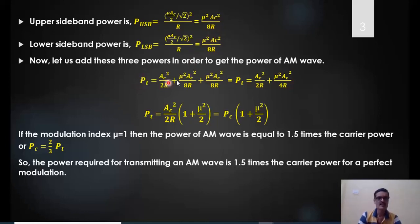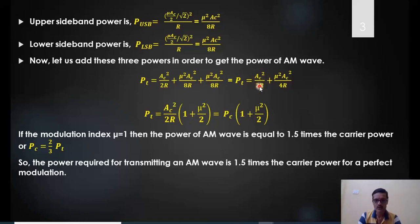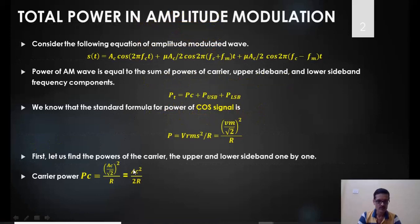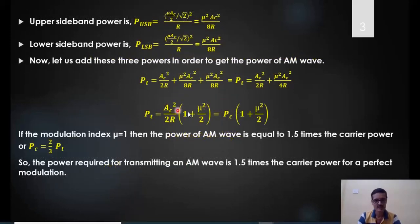The total power is the sum of carrier power plus upper sideband plus lower sideband: Ac²/2R + μ²Ac²/8R + μ²Ac²/8R = Ac²/2R + μ²Ac²/4R. Taking Ac²/2R as a common factor gives PT = (Ac²/2R)(1 + μ²/2). Since Ac²/2R is PC, the standard equation for total power in amplitude modulation is PT = PC(1 + μ²/2).